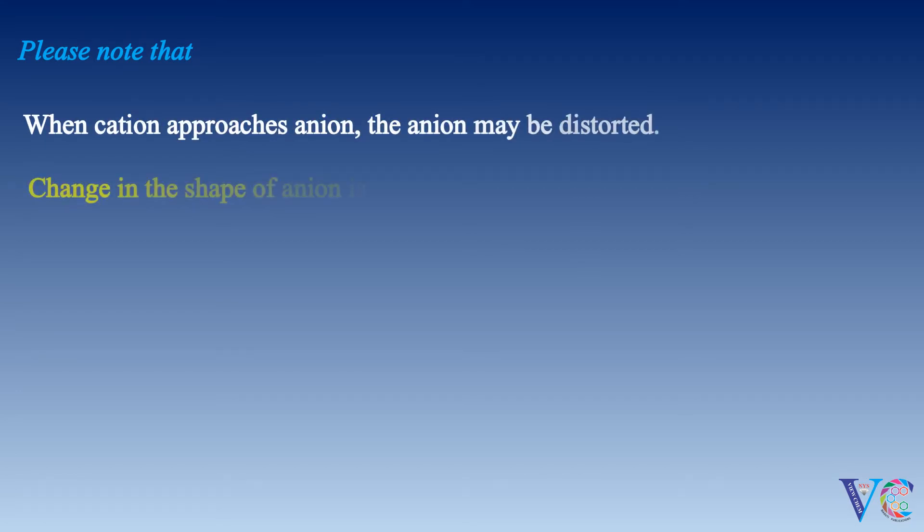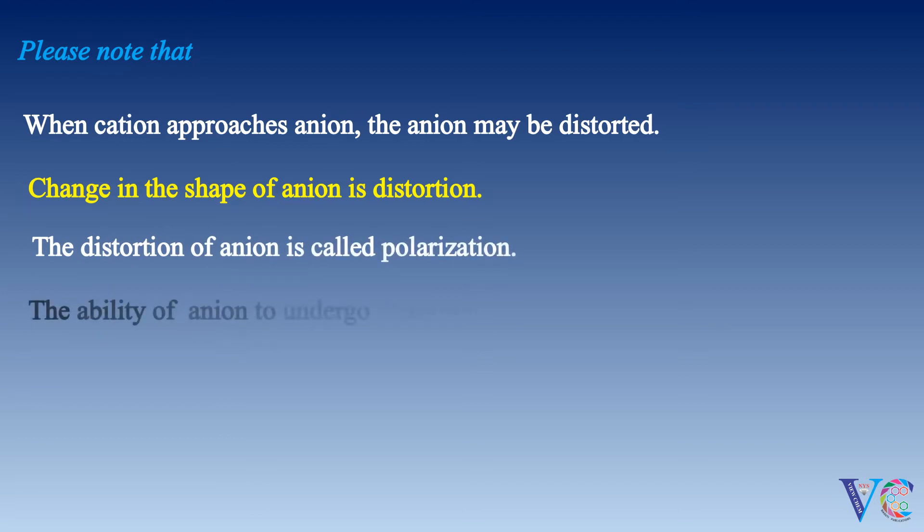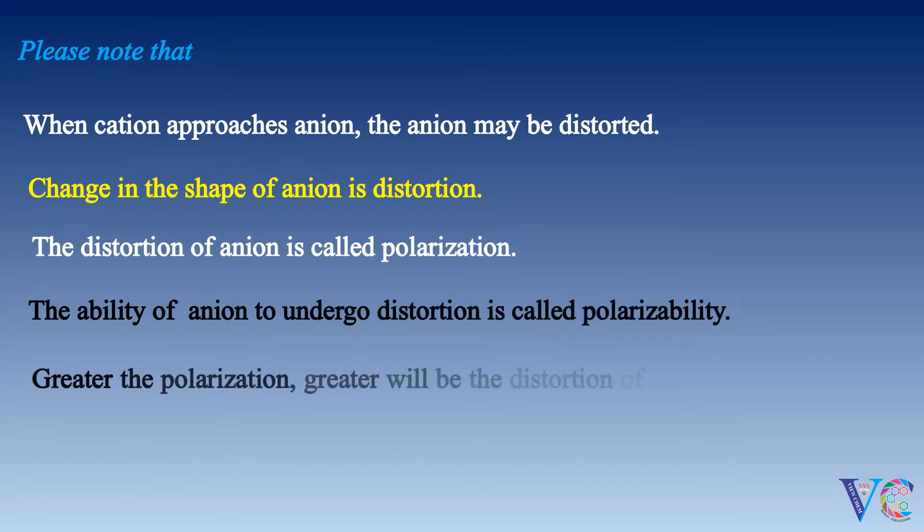Please note that when cation approaches anion, the anion may be distorted. Change in the shape of anion is distortion. The distortion of anion is called polarization. The ability of anion to undergo distortion is called polarizability. Greater the polarization, greater will be the distortion of anion and more will be the covalent character of that ionic bond.